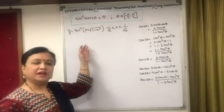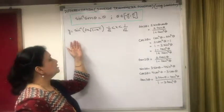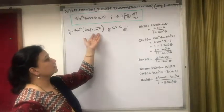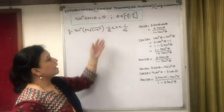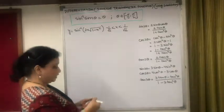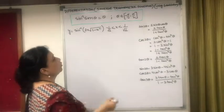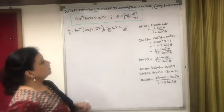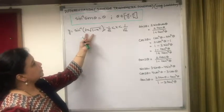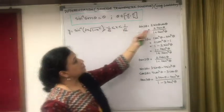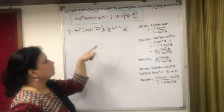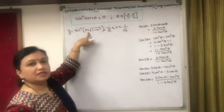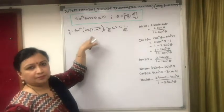We need to find dy/dx if y = sin⁻¹(2x√(1-x²)) and the condition is x ∈ (-1/√2, 1/√2). If I correlate the expression, this comes out as 2 sin θ cos θ. So I can take x as sin θ as well as x as cos θ.